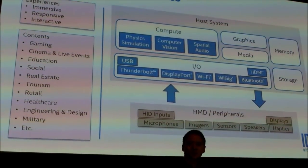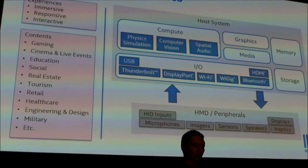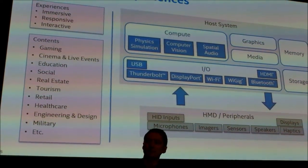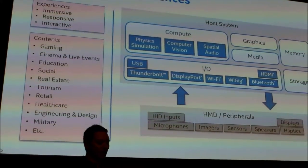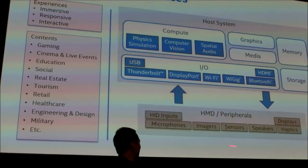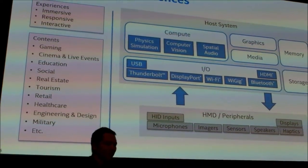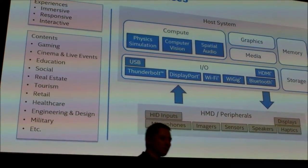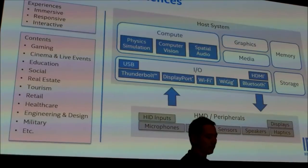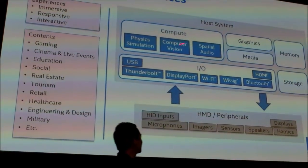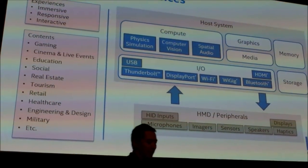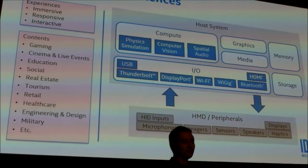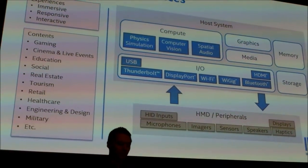Responsiveness is another factor, where you want low latency for your motion-to-photon latency. What that means is you have these really high-frequency sensors and this data needs to be transmitted into the system very quickly with low latency and accurate timestamping. You have to quickly understand the head pose and determine where that person is looking, and where they're expected to look a few milliseconds out.